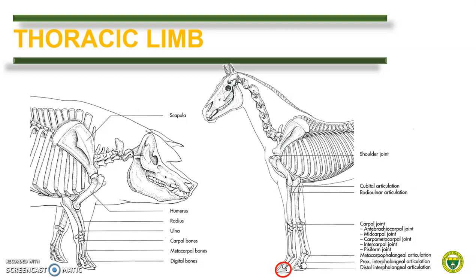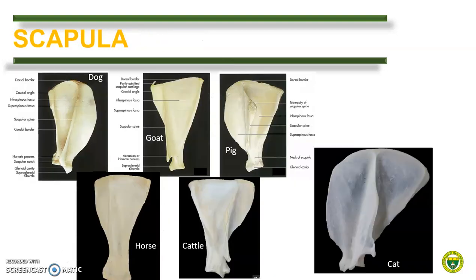In the next slides, we will compare the different bones of the thoracic limb. In this slide, you can see the scapula of different domestic animals.